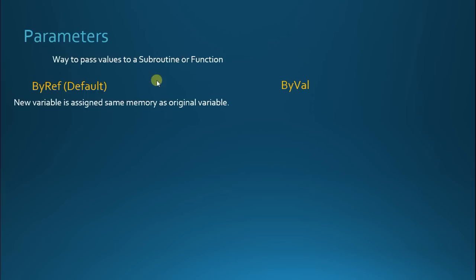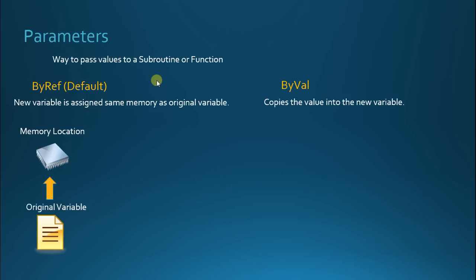When you have a parameter in your subroutines and functions, you create a new variable, and that new variable is, by reference, assigned to the memory from the original variable. When you use the BYVAL keyword, you make a copy of the value and put that value into the new variable. With BYVAL you're making a copy, but with BYREF your new variable is simply pointing to the same spot in memory.